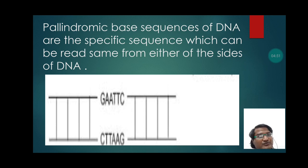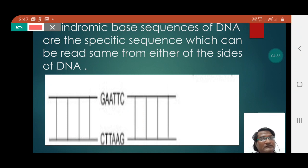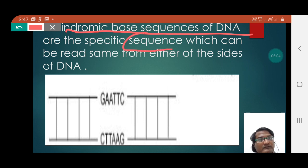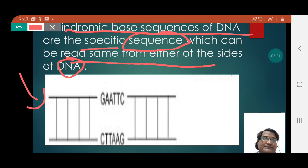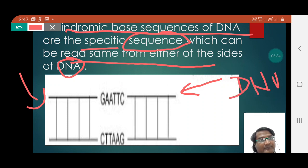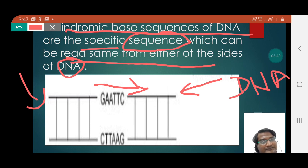This is a very important point. The palindromic sequence of DNA is that particular sequence which you can read the same from both sides. Looking at this picture, we can see the arrangement of nitrogen bases on a DNA strand: guanine, adenine, adenine, thymine, thymine, cytosine — that is, the sequence GAATTC.